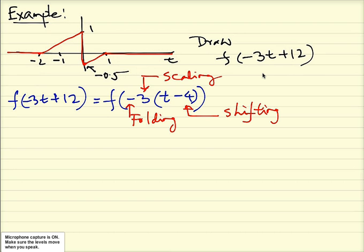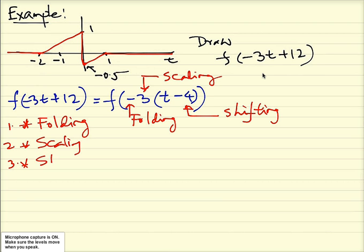All three operations — folding, scaling, and shifting — happen on the signal. However, when we draw the signal, we have to follow this sequence: first we perform the folding, then we do the scaling, then we do the shifting. If you shift first and then do scaling and folding, it will give you a wrong result. So you must follow this sequence: folding, then scaling, then shifting.